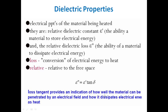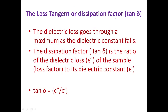The loss tangent tan δ equals ε'' over ε'. It will be maximum when ε'' is maximum and ε' is minimum simultaneously. The trigonometric function tan itself ranges from minus infinity to plus infinity, but since both ε' and ε'' are non-negative, the loss tangent or dissipation factor ranges from 0 to infinity.